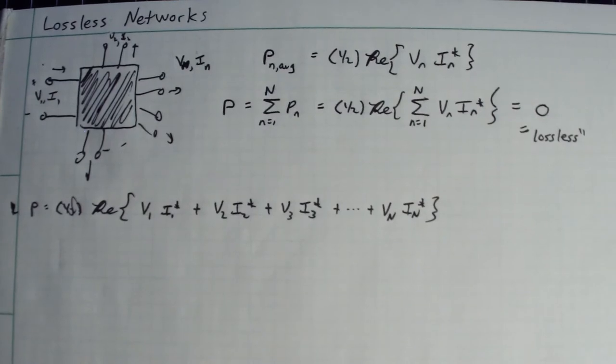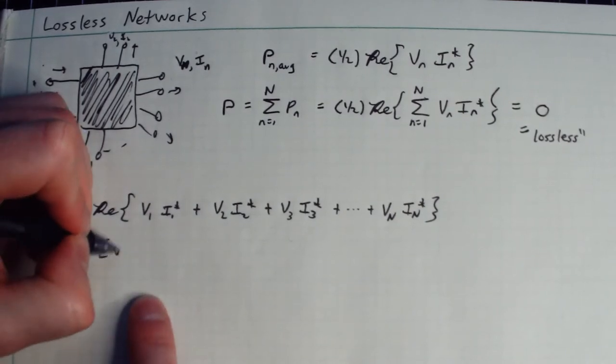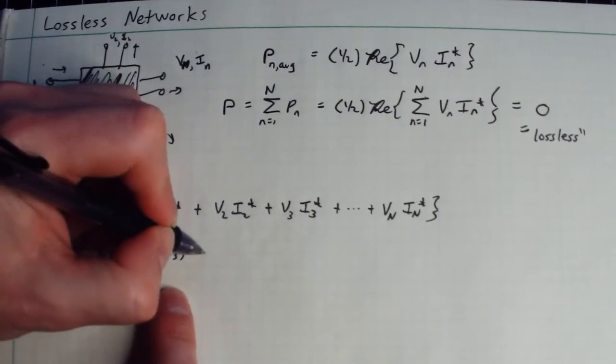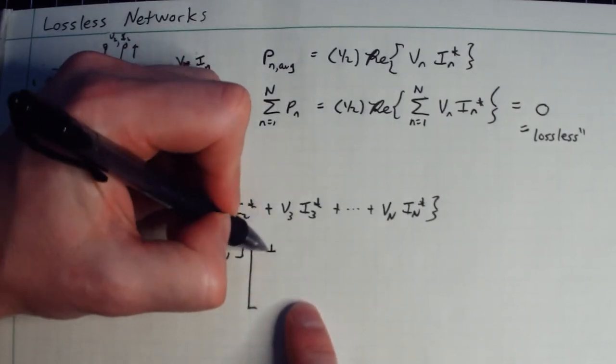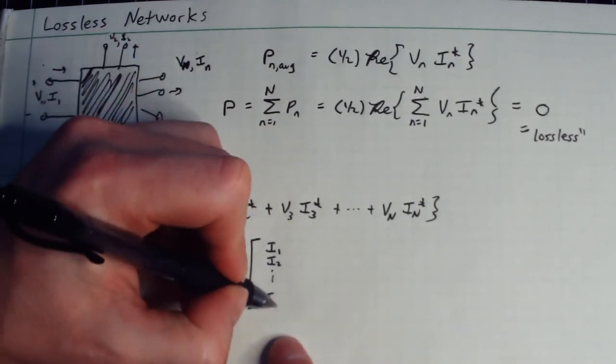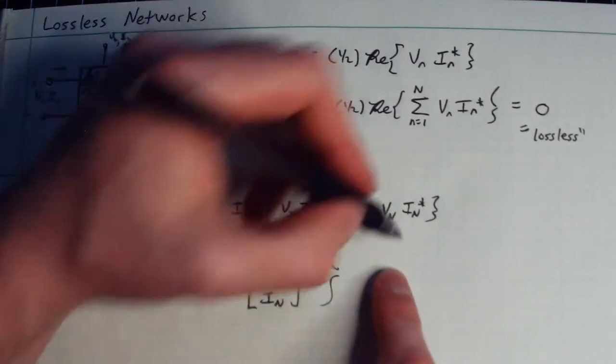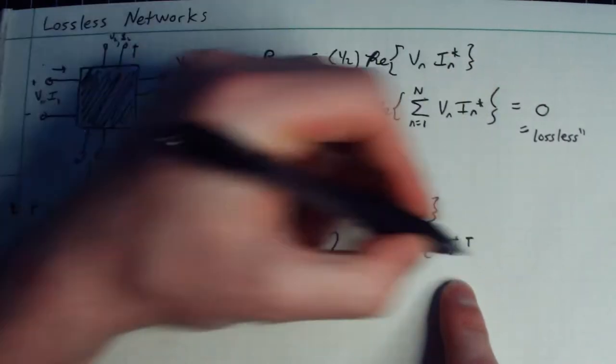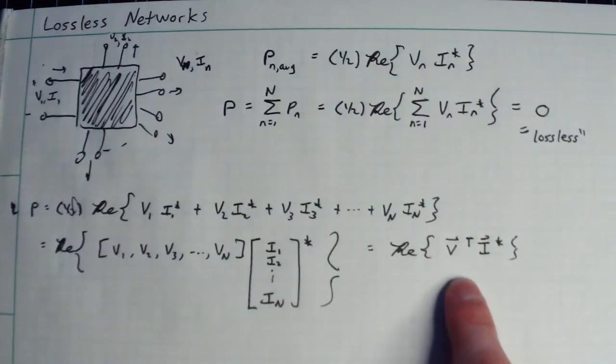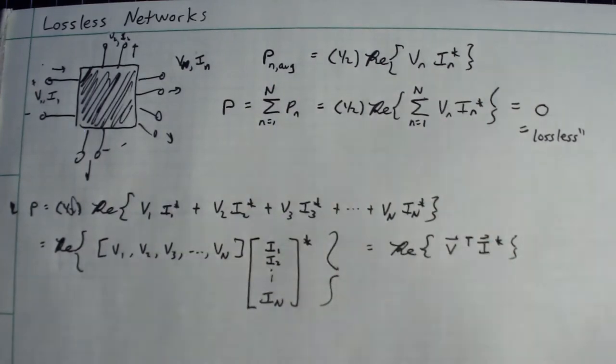What I'm going to do is play a little game with the notation, because you can see how this is extremely tedious, but thank goodness we have matrix vector notation. So I'm going to write this as the real part, and I'm going to say V1, V2, V3, dot dot dot, V sub n, and I'm going to write it in brackets as a vector, as a row vector in particular. And I'm going to say I1, I2, dot dot dot, all the way down to I sub n conjugate, and I'm taking the real part of that. So you see, because of this vector notation here, I can write this out as the real part of V transpose times I conjugate. So these are vectors. This is the beauty, again, of matrix vector notation, is that it allowed me to express this giant summation in a nice compact notation here.